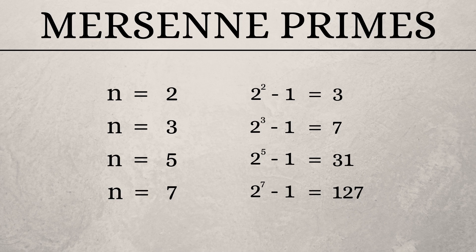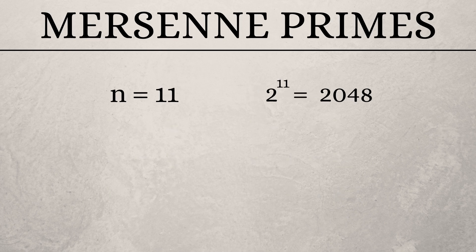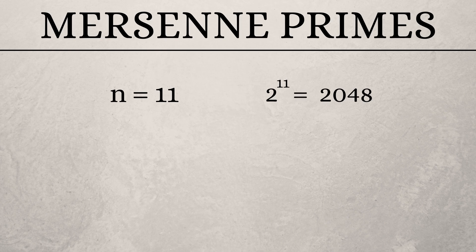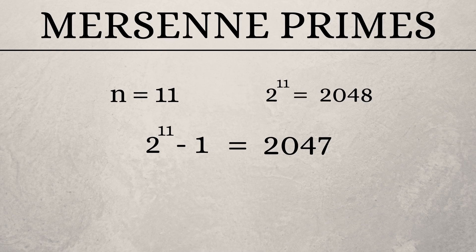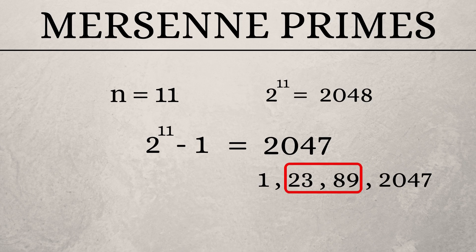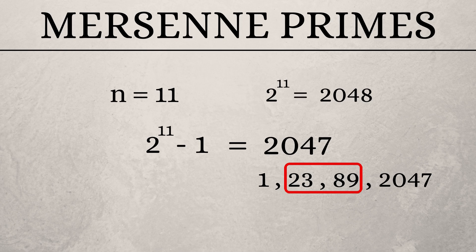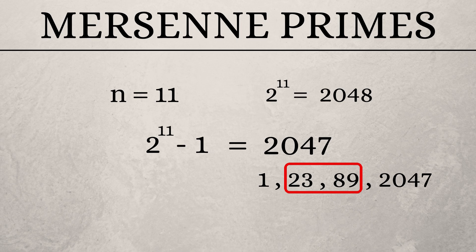Now, let's see what happens when n is equal to 11. The Mersenne number is 2047. But this number is not a prime number. It also has the factors of 23 and 89. So, we can conclude that not all prime numbers will give us Mersenne primes.